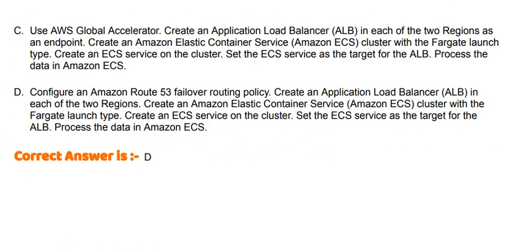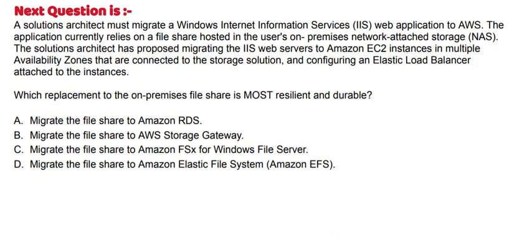The correct answer is Option D. Next question: A solutions architect must migrate a Windows Internet Information Services web application to AWS. The application currently relies on a file share hosted in the user's on-premises network-attached storage. The solutions architect has proposed migrating the IIS web servers to Amazon EC2 instances in multiple Availability Zones connected to the storage solution, and configuring an Elastic Load Balancer attached to the instances. Which replacement to the on-premises file share is most resilient and durable? Option A: Migrate the file share to Amazon EFS. Option B: Migrate the file share to AWS Storage Gateway. Option C: Migrate the file share to Amazon FSx for Windows File Server. Option D: Migrate the file share to Amazon Elastic File System.